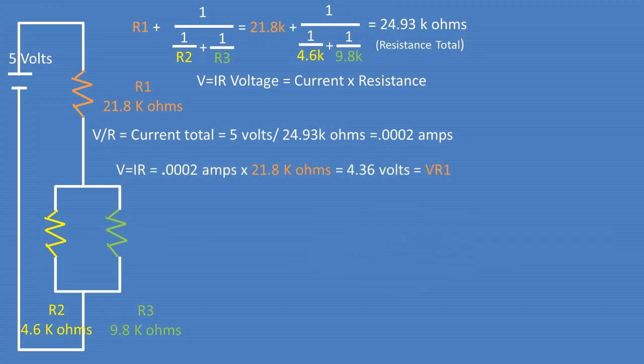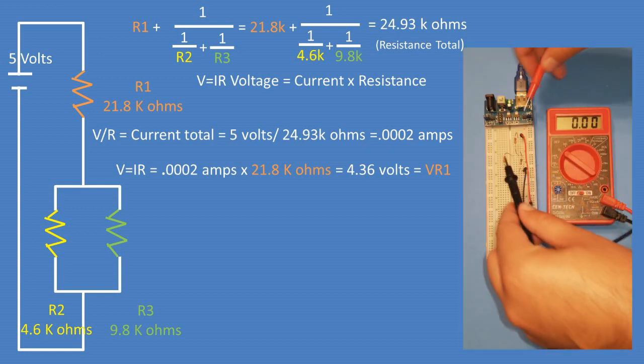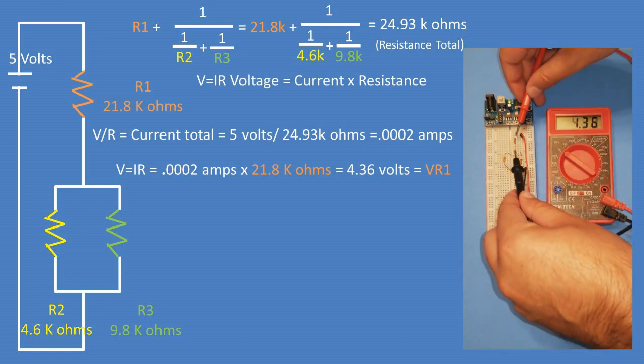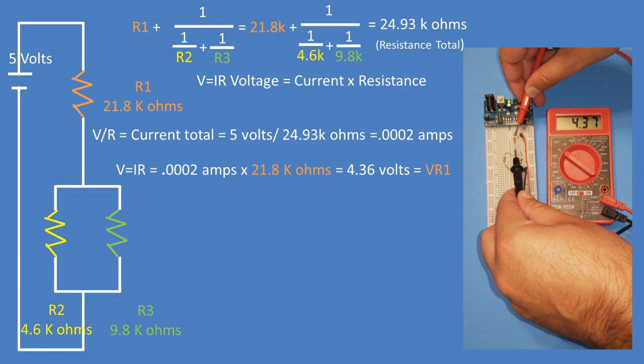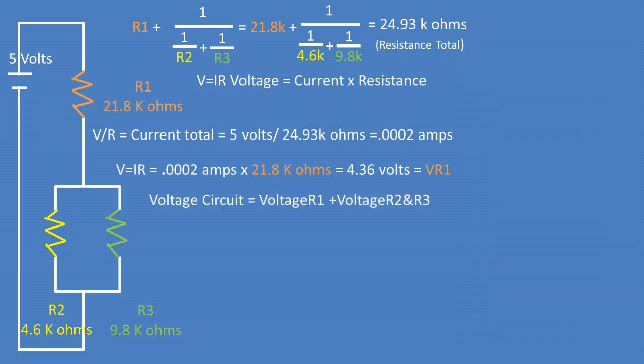This means that once again, we can use V equals IR and plug in the resistance of resistor 1 of 21.8 kOhms and current total of 0.2 milliamps. We get a voltage at resistor 1 of 4.36 volts. Recall that the total voltage being applied to a series circuit equals the sum of each resistor's voltage.